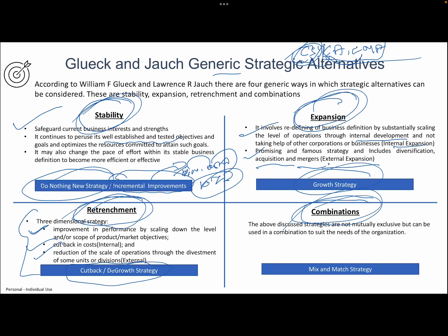The fourth strategy is a combination of all three. Based on the product life cycle or industry life cycle, for a particular product you can take a stability-related strategy; for a product that is growing, take an expansion strategy; and if a product is not doing well, apply a retrenchment strategy. These strategies are not mutually exclusive — an organization can take any combination.